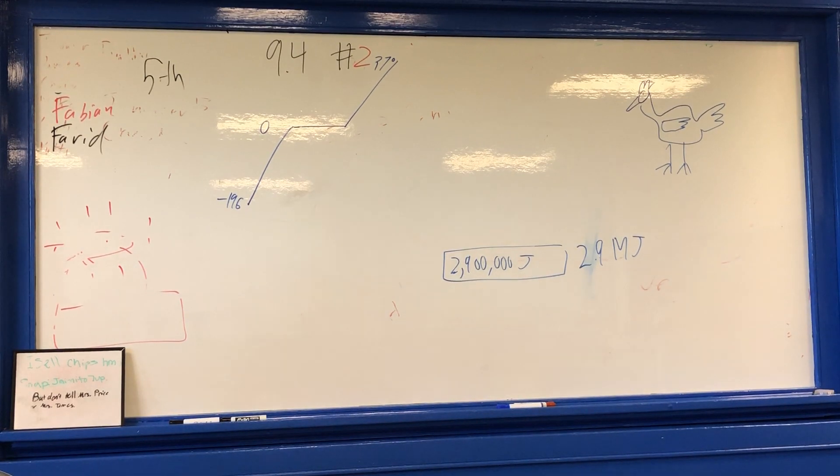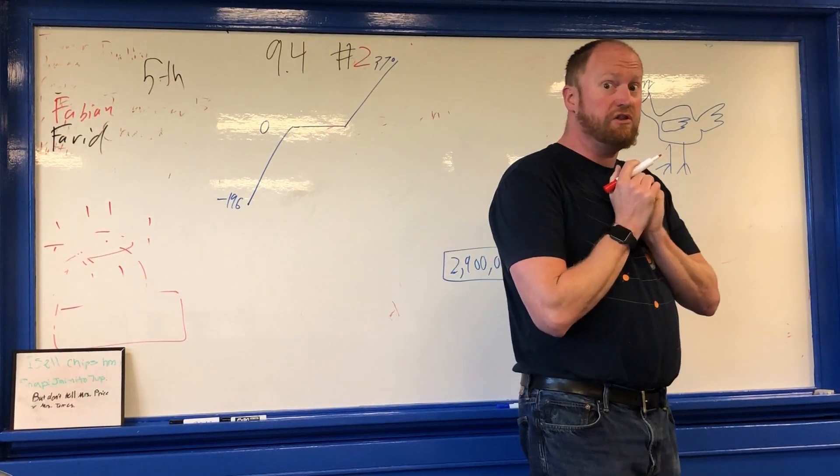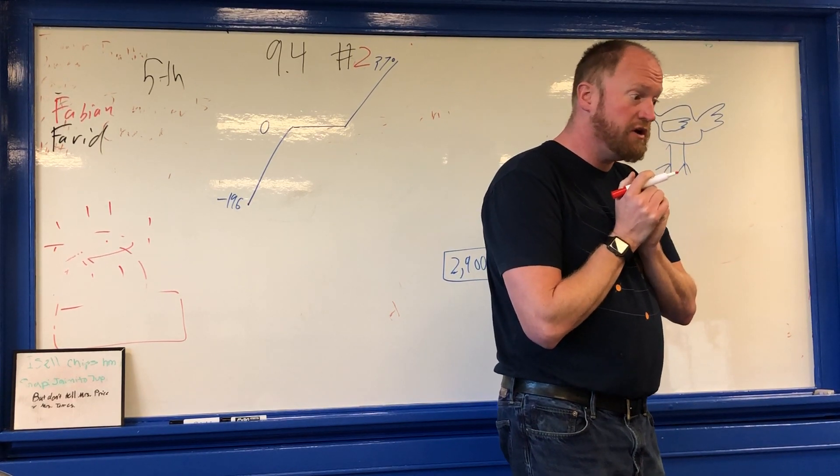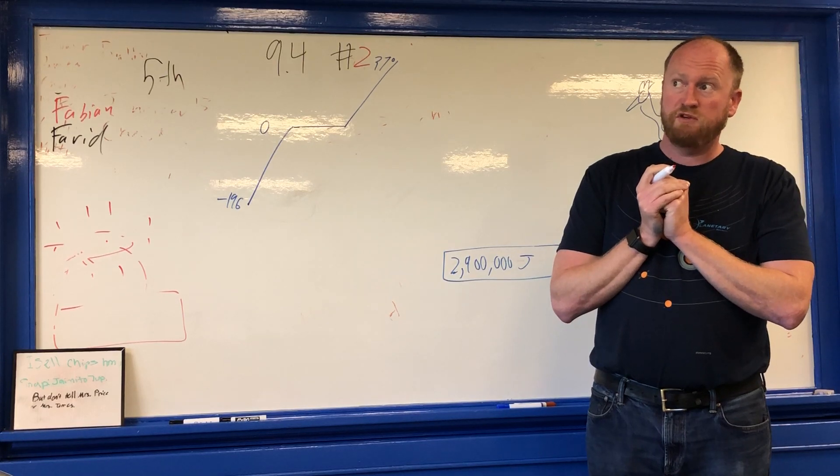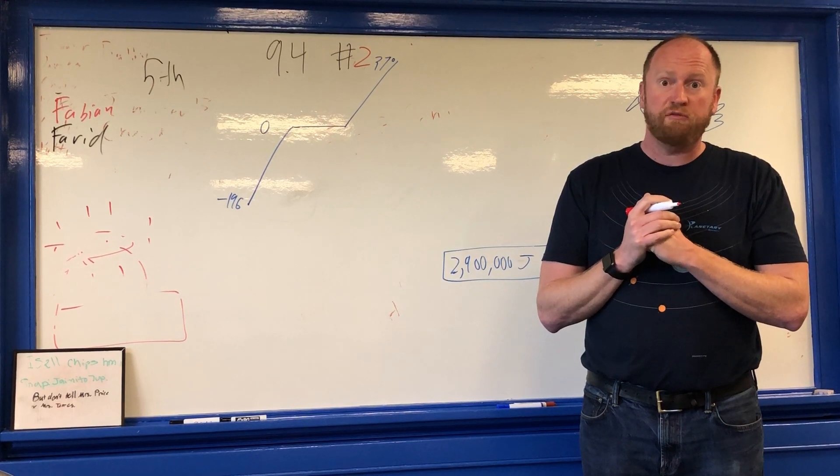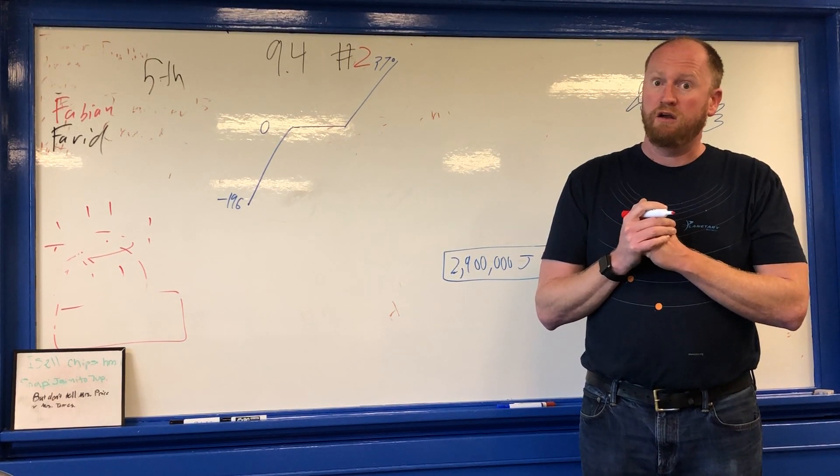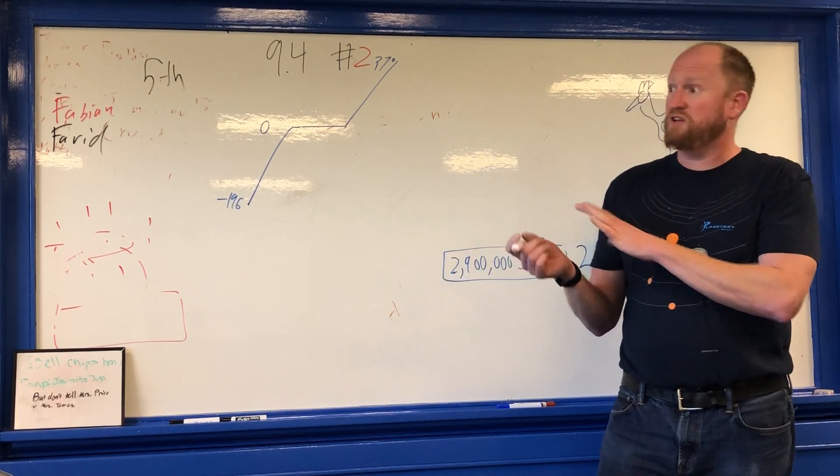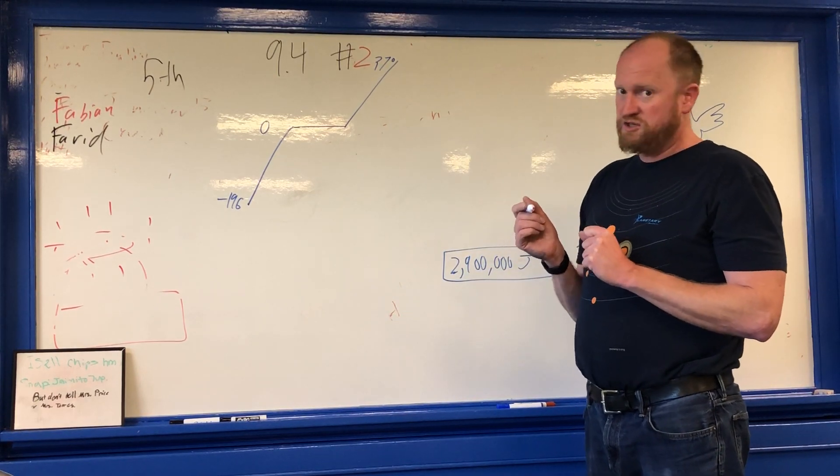Well here we have 9.4 number two. I forgot to think about something. If you start thawing a chicken out, don't you have to do it in a certain amount of time? What if we didn't thaw the chicken out fast enough? Could the chicken die? In fact, I think for thawing chickens, you must complete the entire thawing process in five minutes or less.